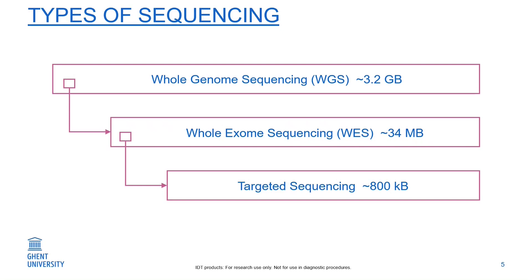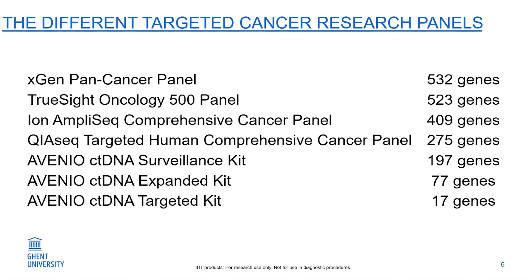In our study, we compared different targeted sequencing panels to see which one is the most appropriate for cancer genetics and pharmacogenetics in cancer research. We selected seven cancer-specific research panels: four bigger ones — the xHen pan cancer panel, the TrueSight Oncology 500 panel, the Ion AmpliSeq comprehensive cancer panel, and the KIASC targeted human comprehensive cancer panel. We also included three smaller sequencing panels focused on circulating tumor DNA, all from Avenio: the surveillance kit, the expanded kit, and the targeted kit.